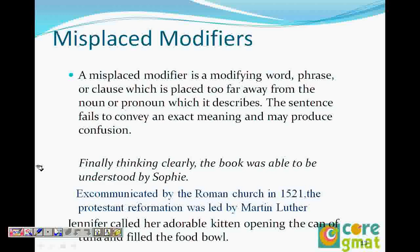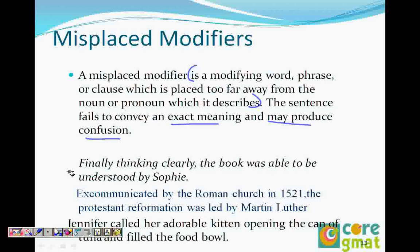A misplaced modifier is a phrase or clause placed too far away from the noun or pronoun it describes. It fails to convey an exact meaning and can produce ambiguity or confusion, making the sentence illogical. For example: 'Finally thinking clearly, the book was able to be understood by Sophie.' Here, 'finally thinking clearly' is the modifier.